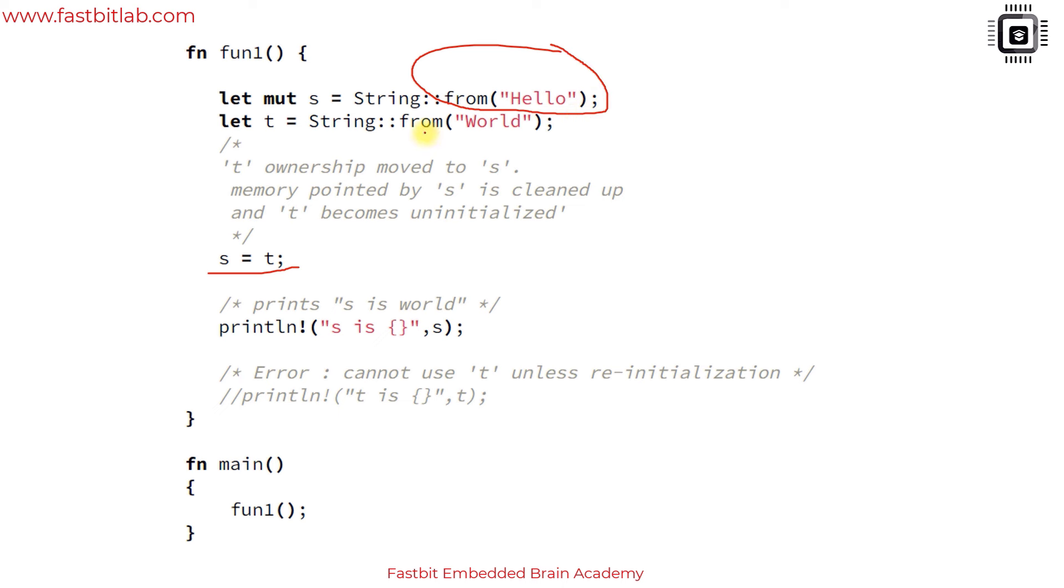t's ownership is moved to s. That means memory pointed by s is cleaned up - this data is cleaned up automatically. Now s becomes the owner of this data s equals t and t becomes uninitialized. If you try to print the value of s that's a legal statement, s would print world, but you cannot try to print t unless you reinitialize it.